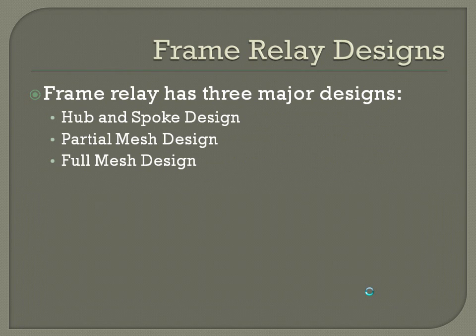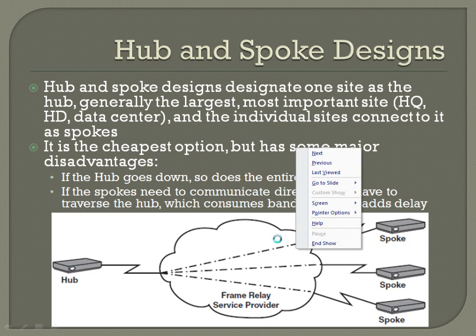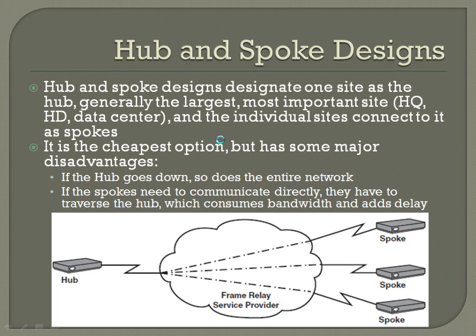Frame Relay designs include hub and spoke, partial mesh, and full mesh. In the hub and spoke design, one site is designated as the hub — usually the most important site like headquarters, the help desk, or the data center. The individual sites connecting to it are all spokes, kind of like a bike tire with a hub in the middle and spokes going out to individual locations.